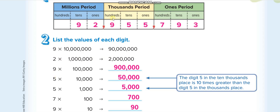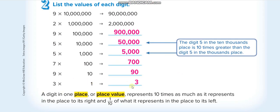Continuing: 9 is in the hundred thousands place, so 9 times 100,000 equals 900,000. Then 5 times 10,000 equals 50,000. The next 5 times 1,000 equals 5,000. Then 7 times 100 equals 700. Then 9 times 10 equals 90. And 3 times 1 equals 3. This is how we write the expanded form.